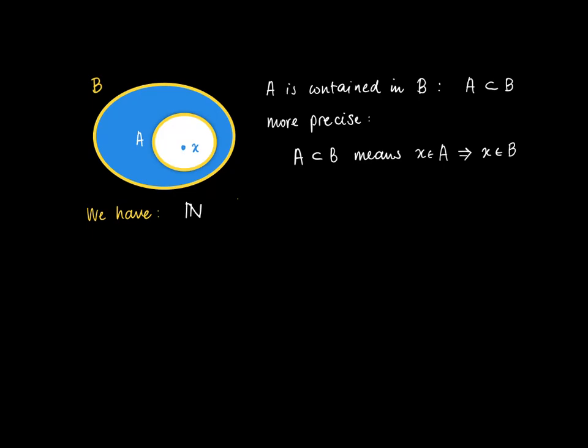For instance, we have that the set of natural numbers is contained in the set of all integers, is contained in the set of all rational numbers, is contained in the set of all real numbers, which is contained in the set of all complex numbers.